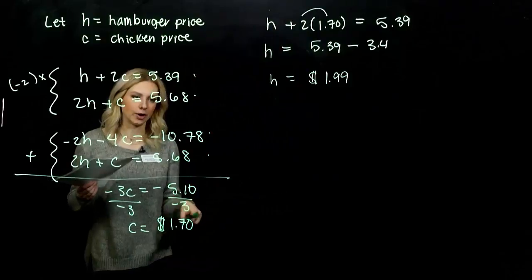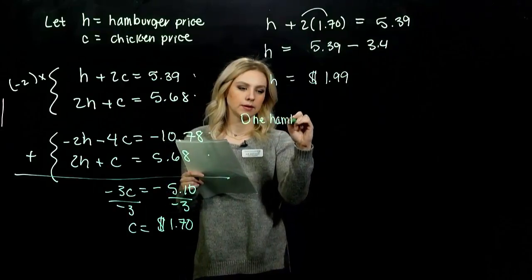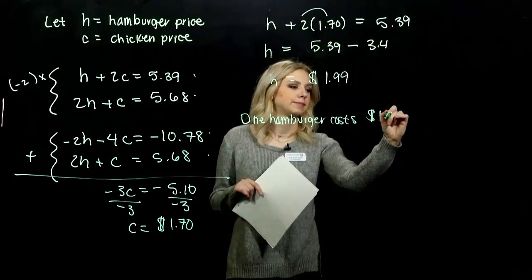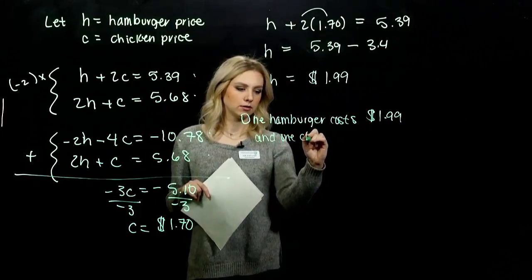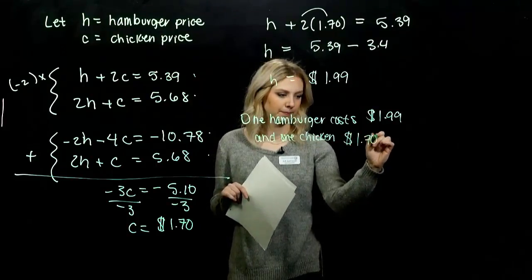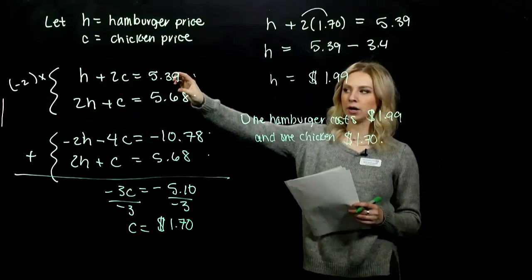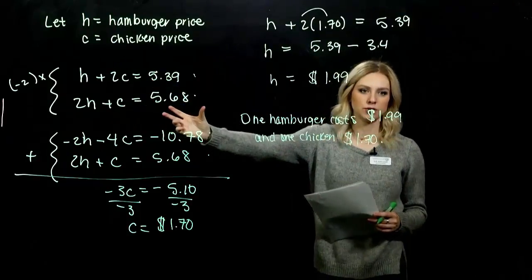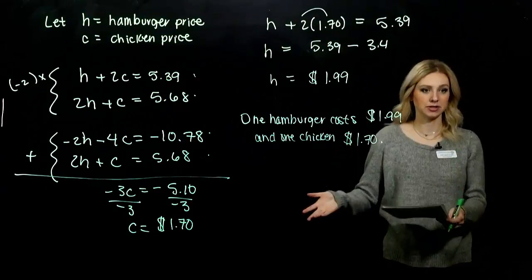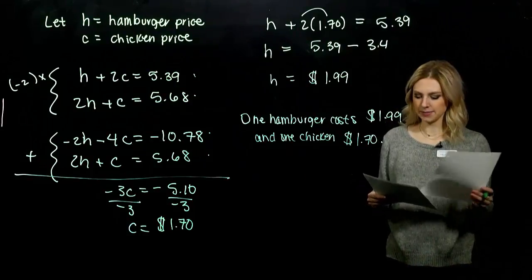So we want to write the units on there, and we want to sum it up at the end. What were we talking about? So one hamburger costs $1.99, and one chicken piece is $1.70. And again, if you think you made mistakes, didn't do it correctly, plug in those values for the prices. Make sure that the combinations actually turn out to the total price that they said it was going to be. So even if you solved it using substitution, you should have come down to the same values. If you didn't, go back and double check the numbers, maybe use a calculator to verify. Make sure you didn't make any mistakes.